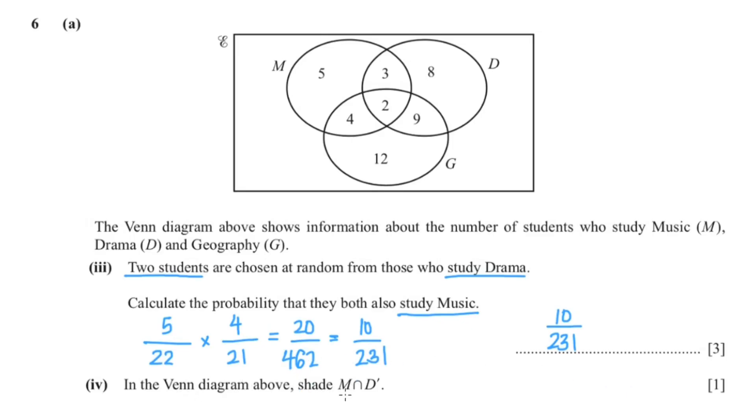In the Venn diagram, shade M intersect not D. So it is over here.